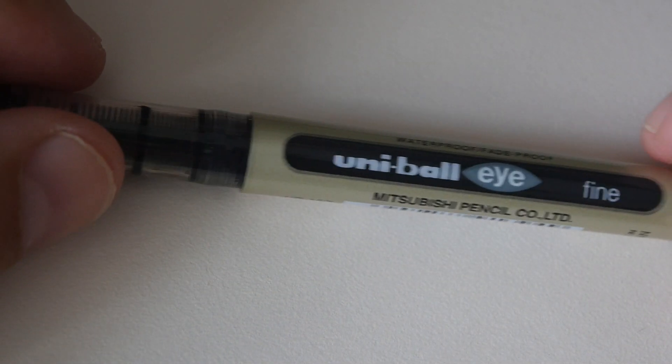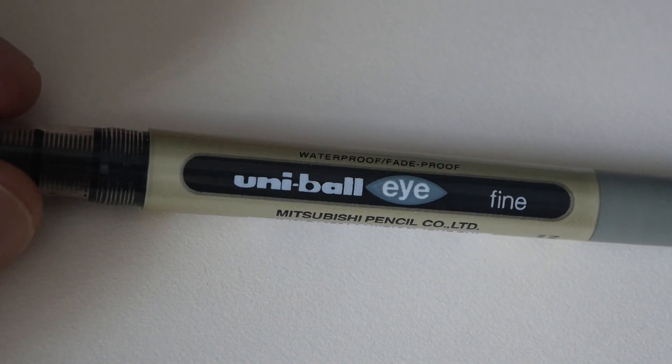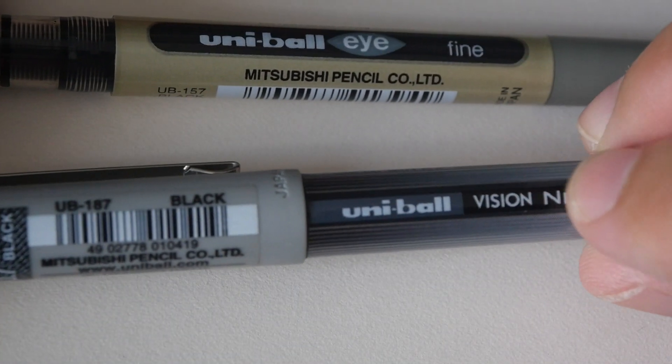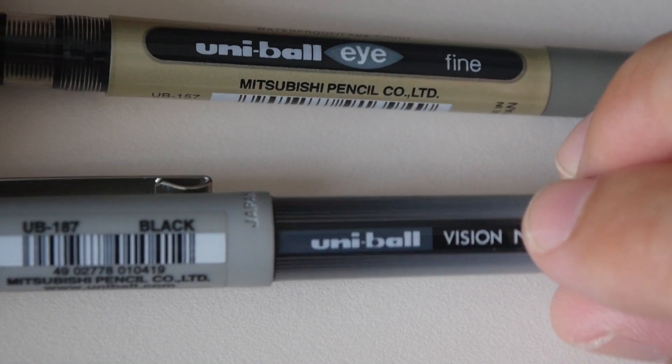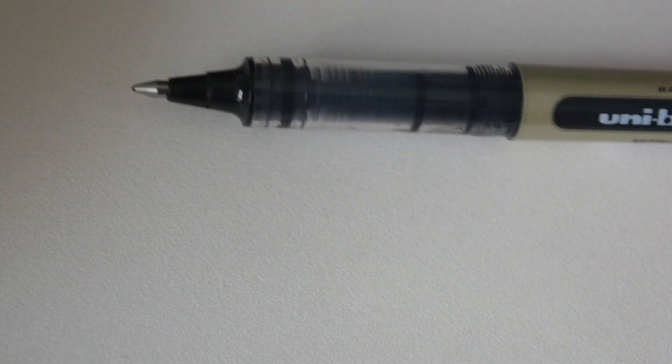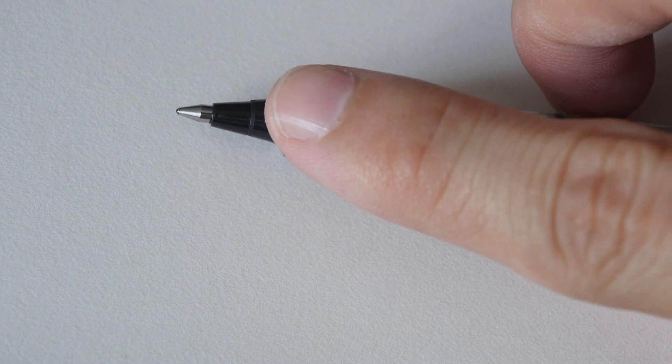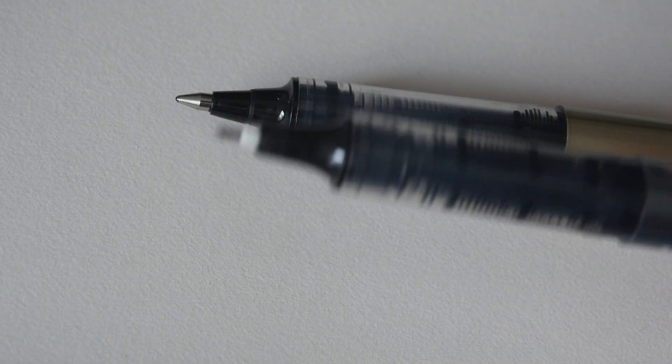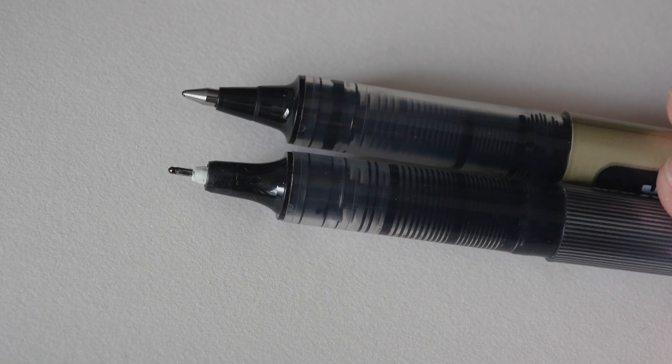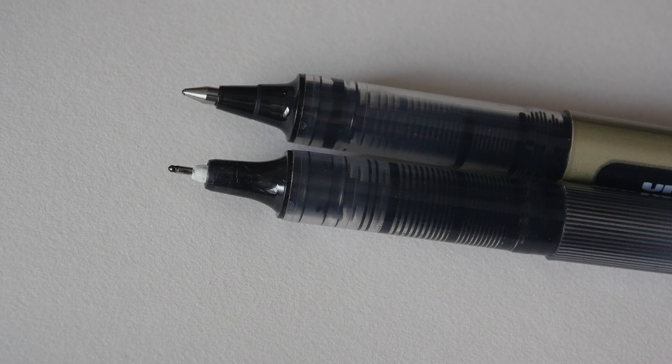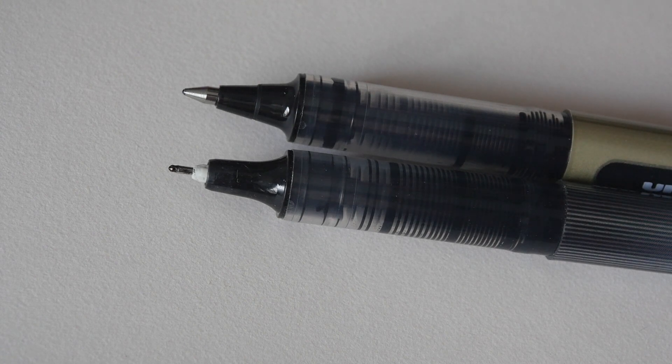In some countries the Uniball Eye is known as the Uniball Vision. So Uniball Vision and Uniball Eye is the same and they also have variations when it comes to the tip as well. This is the roller ballpoint tip. They also have the needlepoint tip and there are some slight differences which I'm going to show you later on.